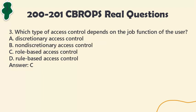Question 3: Which type of access control depends on the job function of the user? A. Discretionary access control. B. Nondiscretionary access control. C. Role-based access control. D. Rule-based access control. Answer: C.